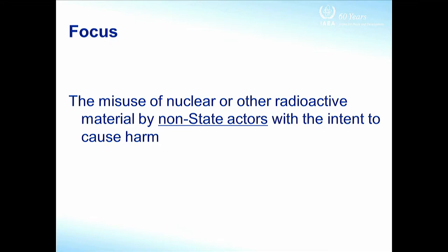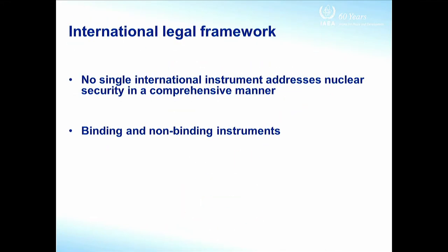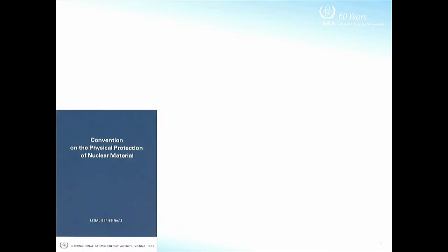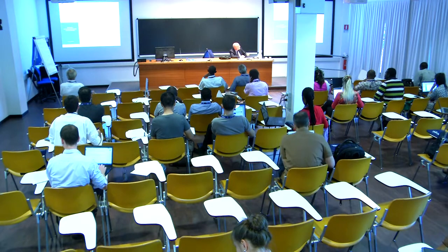Gradually, IAEA member states became aware that there was a need for the IAEA to deal with nuclear security as well. The Board of Governors adopted decisions authorizing the IAEA Secretariat to act — these were the so-called nuclear security plans. But even before these plans started, at least one treaty was adopted under the auspices of the IAEA: the Convention on the Physical Protection of Nuclear Material (CPPNM), the first binding instrument adopted by IAEA member states in this area. This Convention was later amended in 2005, with the amendment entering into force in May 2016.